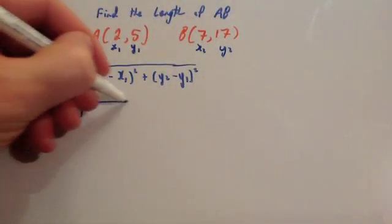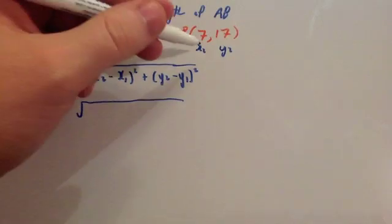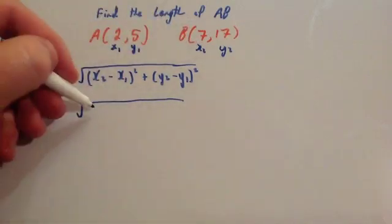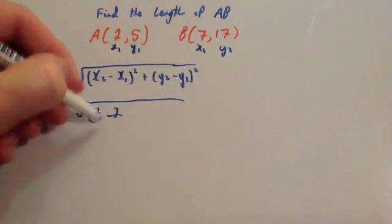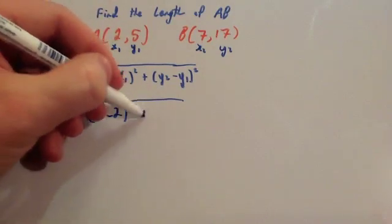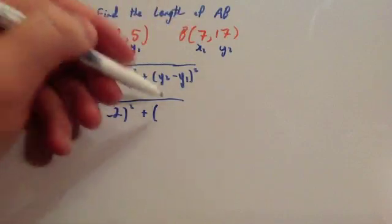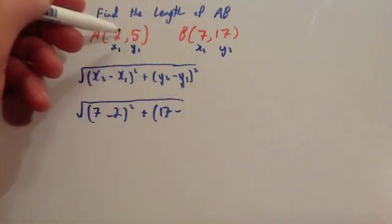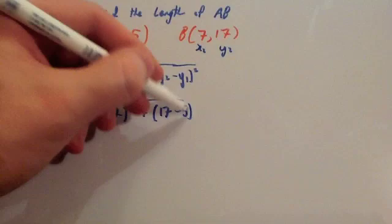So I get the square root of x2, well that's going to be 7, minus x1, 2, squared, plus y2, 17, minus y1, which is 5, squared.